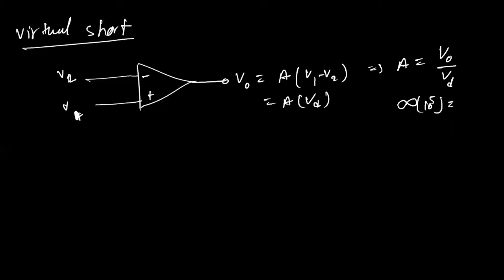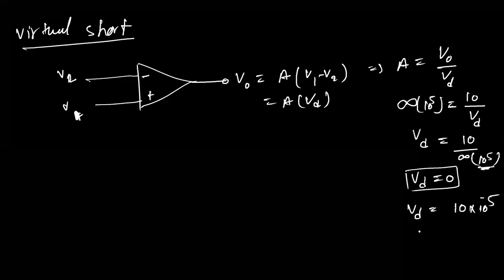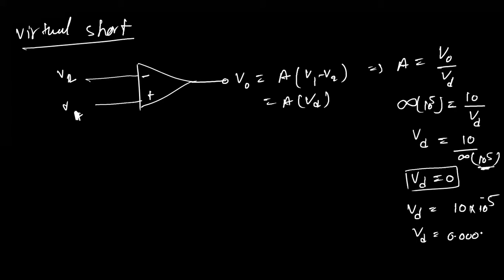If V_output is something like 10 volts and gain is approximately 10^5, then V_d = 10 / 10^5, which is approximately 0.0001, i.e., nearly zero. So the difference between the two input terminals is extremely small — practically close to zero. This means if we take the ideal condition, V_d should be exactly zero.